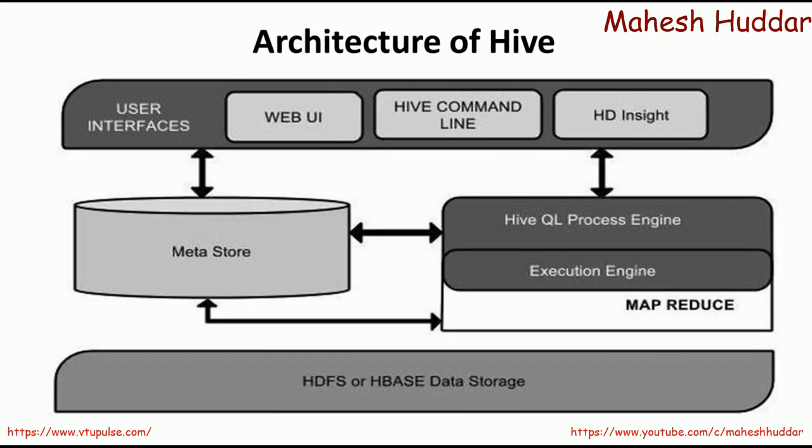Now we will see the architecture of Apache Hive. Apache Hive has five components: the first component is the user interface, the second is the meta store, the third is the HiveQL process engine, the fourth is the execution engine, and the fifth is HDFS or HBase data storage.